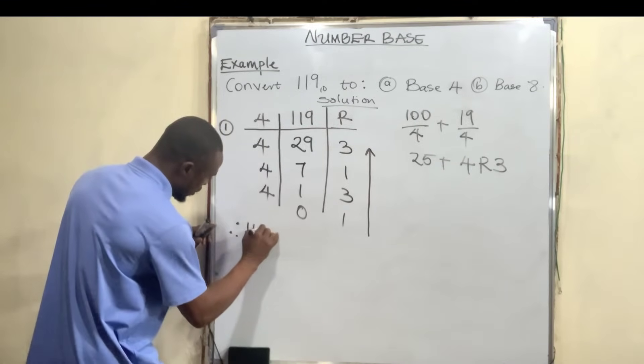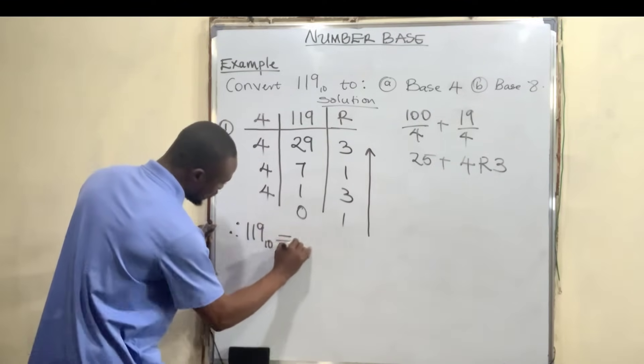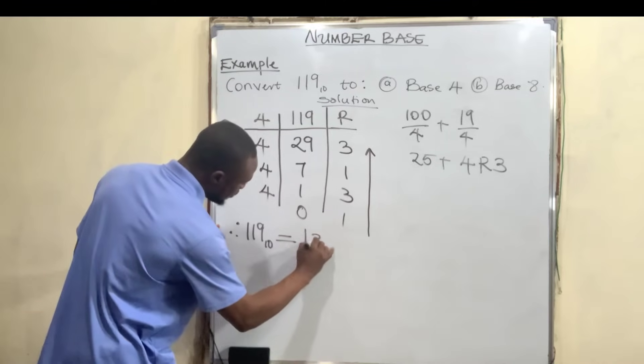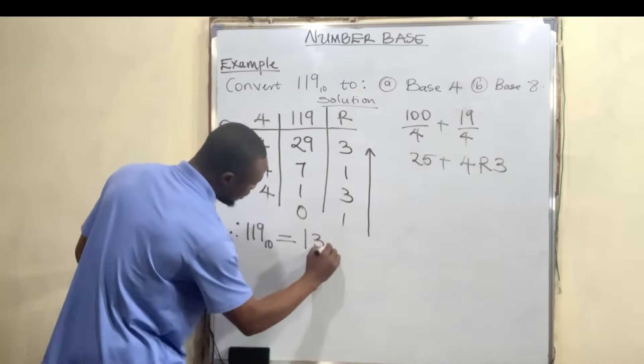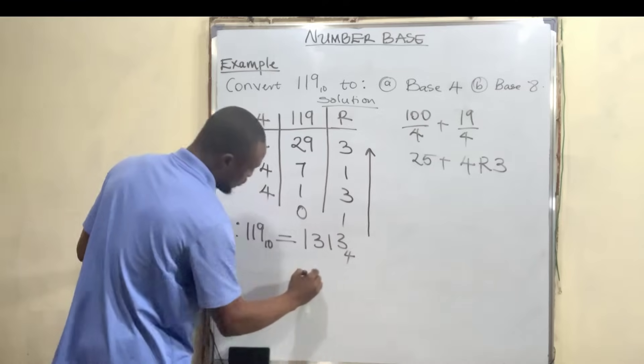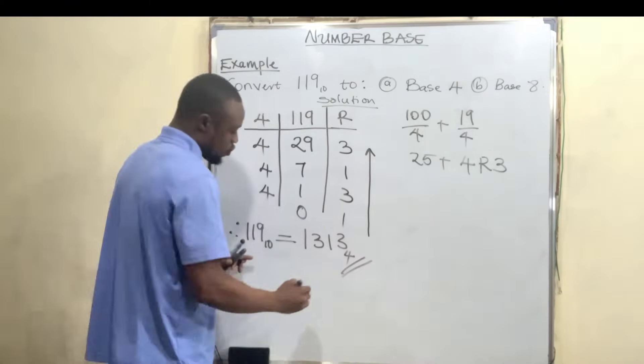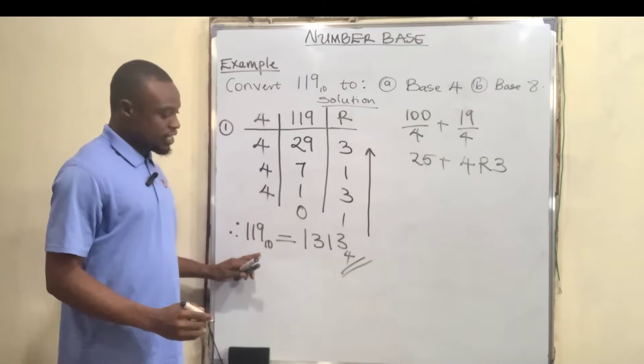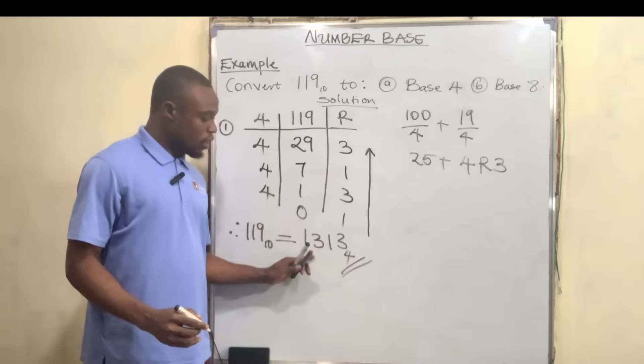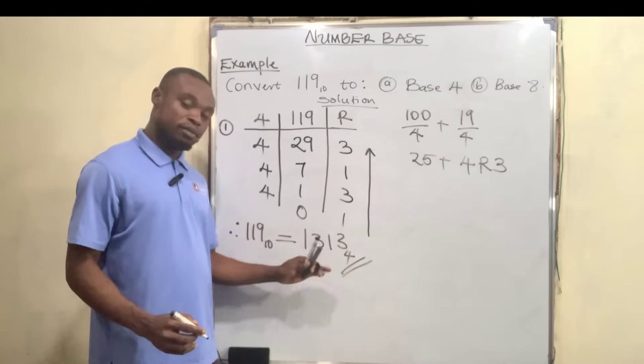Therefore, 119 base 10 is equal to 1313 base 4.